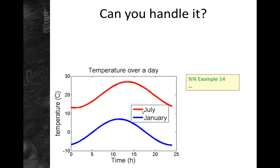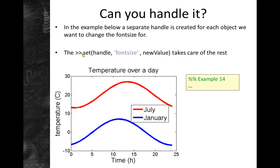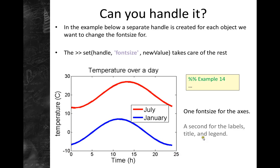Let's do some things with handles in this figure. Here I've created separate handles for each of the objects I wanted to change. The general syntax is: set(handle, property, new_value) — where 'handle' is your variable name. Here I've used one font size for the axis, which controls the tick label sizes, and a second font size for the labels, title, and legend. You could give them all individual font sizes if you wanted to.